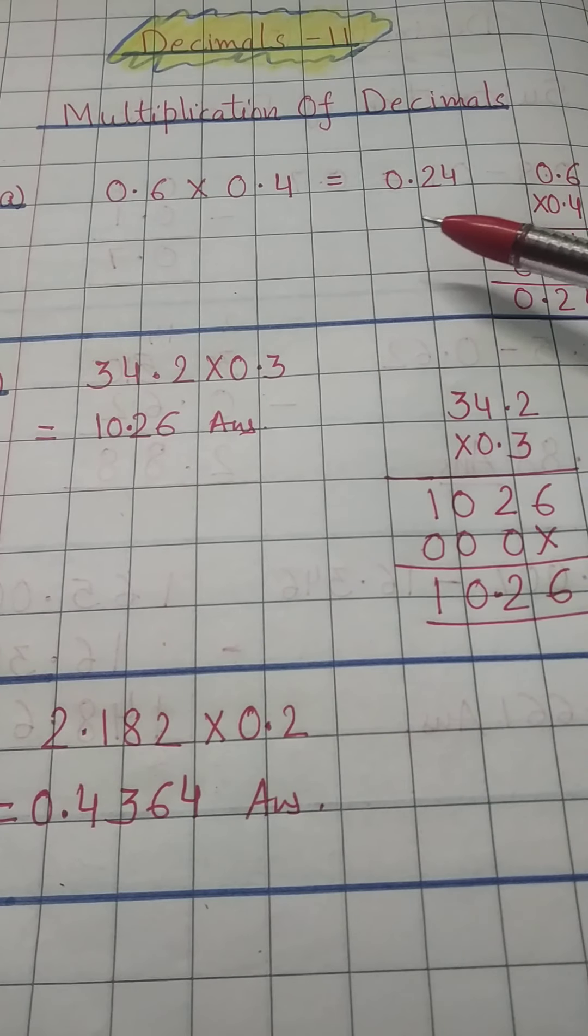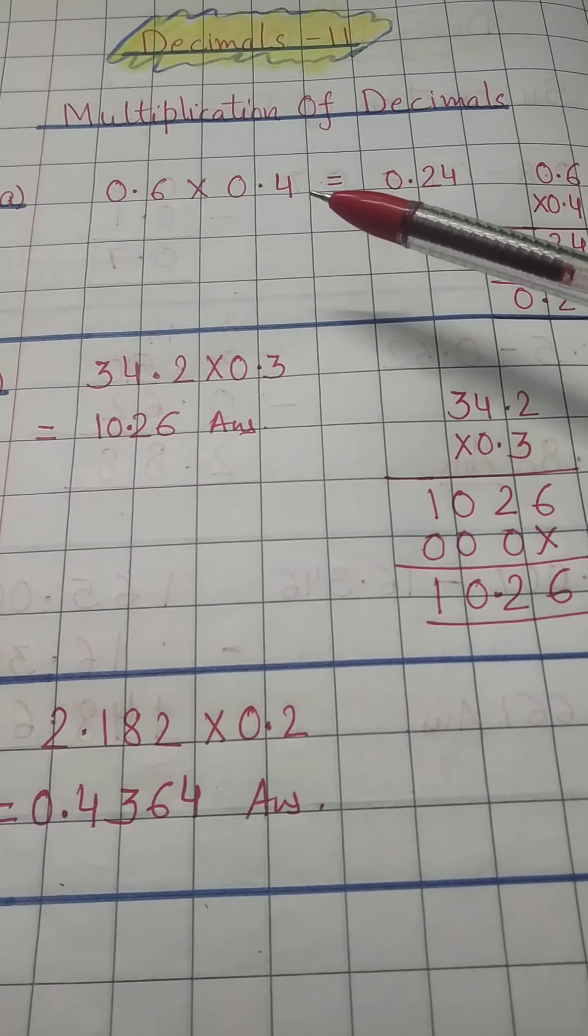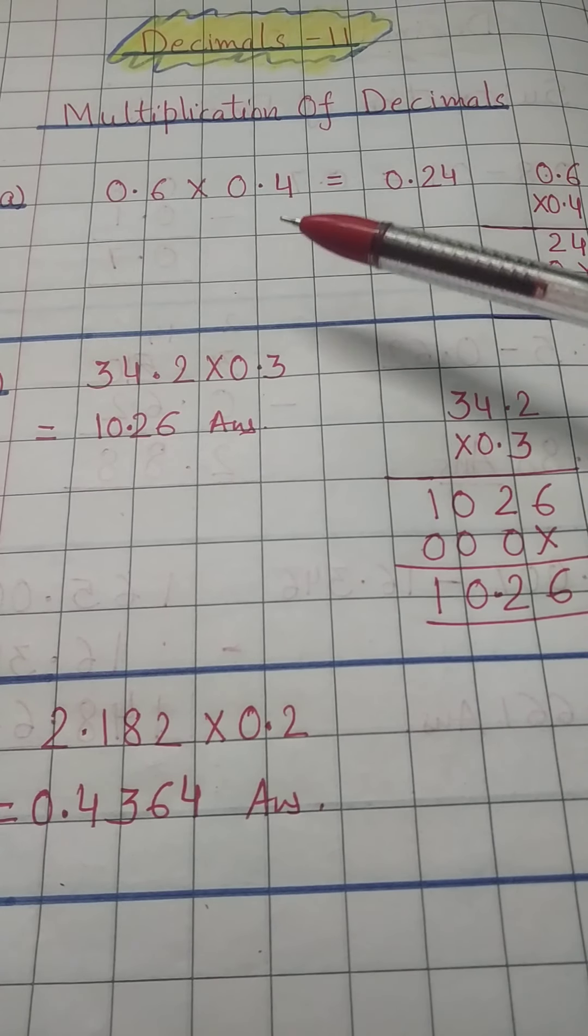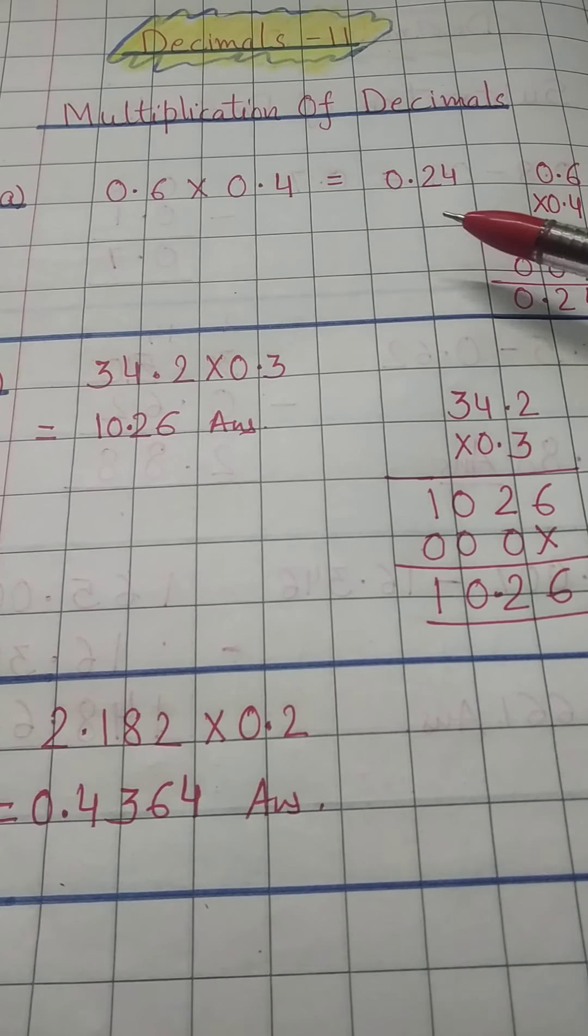Here 6 times 4 is 24, but we will add the number after decimal, 1 and 2, there are two digits, then we will put decimal before two digits from the right side: 1, 2, and decimal place. So this is important.